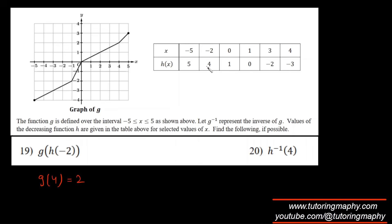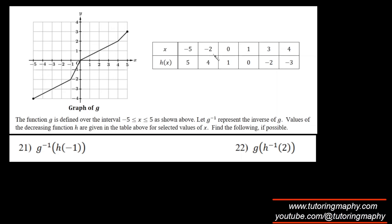h⁻¹(4) means find where y = 4 in the h table; the corresponding x = -2, so h⁻¹(4) = -2. For h(-1): there is no x = -1 in the table, so this is not possible. For h⁻¹(2): there is no y = 2 in the h table either, so this is also not possible.